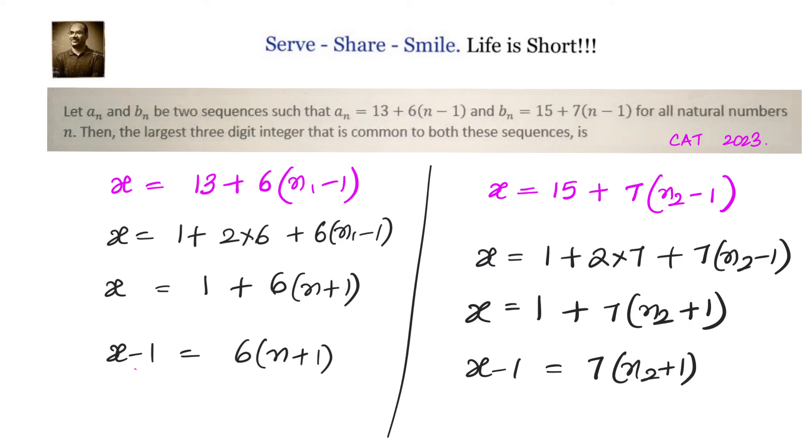What we are getting is x minus 1 equals 6 into some q1, but that is also equals 7 into q2, where q1 and q2 are natural numbers. That means x minus 1 is a multiple of 6 and 7, which tells us x minus 1 should be a multiple of 6 into 7, which is 42.